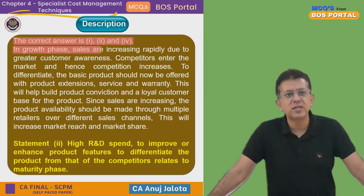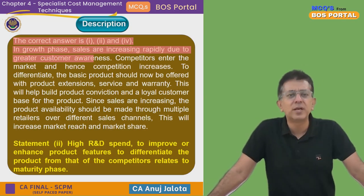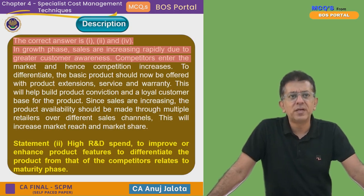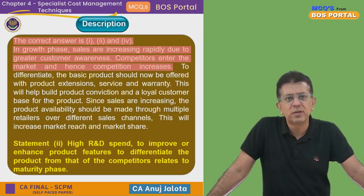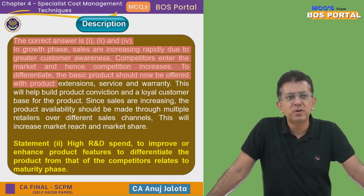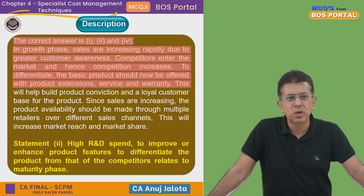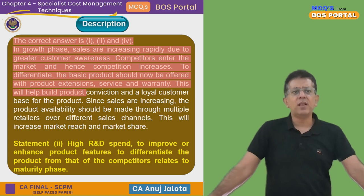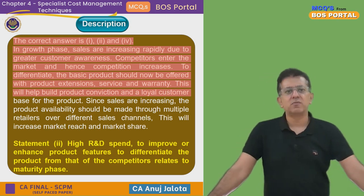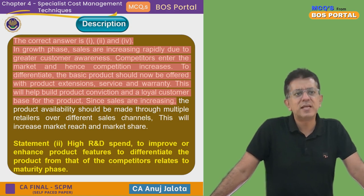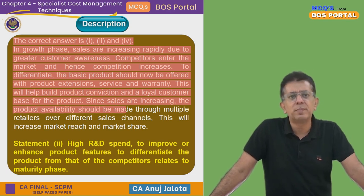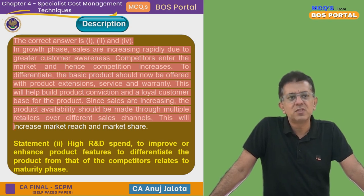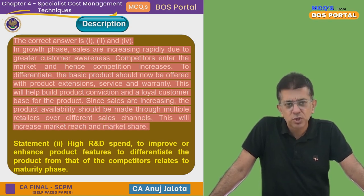Why? In the growth stage, sales are increasing rapidly due to greater customer awareness. Competitors enter the market and competition increases. To differentiate, products should be offered with extension service and warranty — this helps build product conviction and a loyal customer base. Since sales are increasing, product availability should be made through multiple retailers across different sales channels to increase market reach and market share.